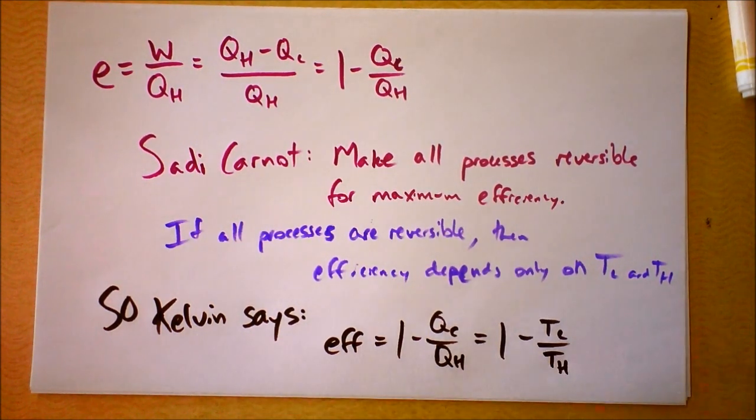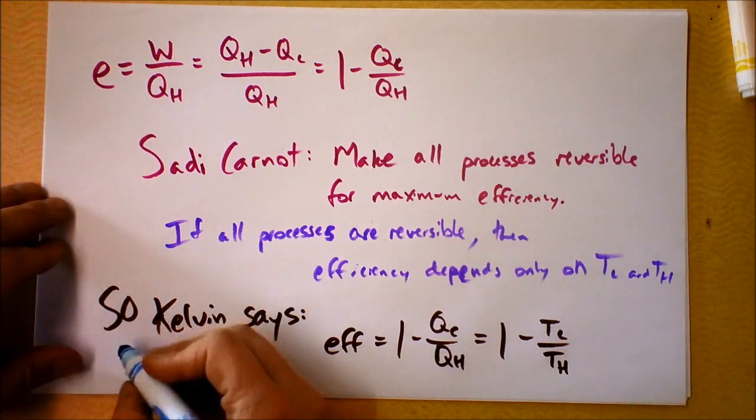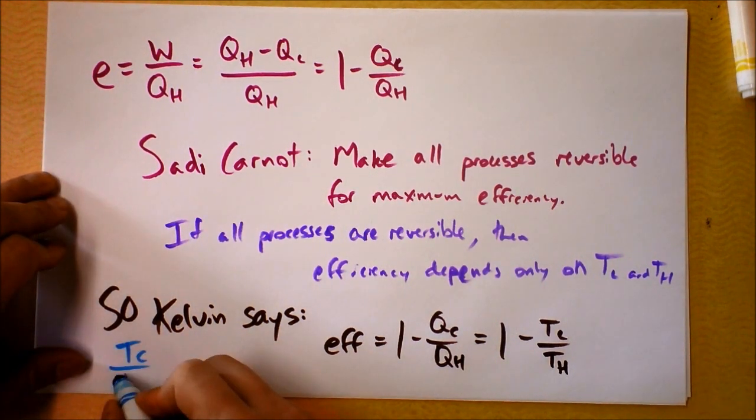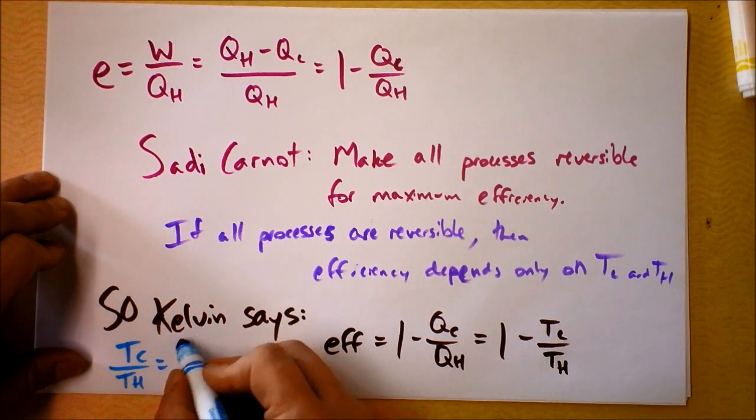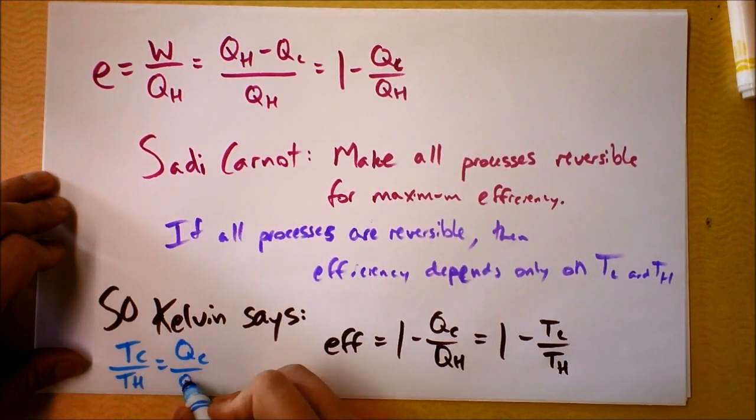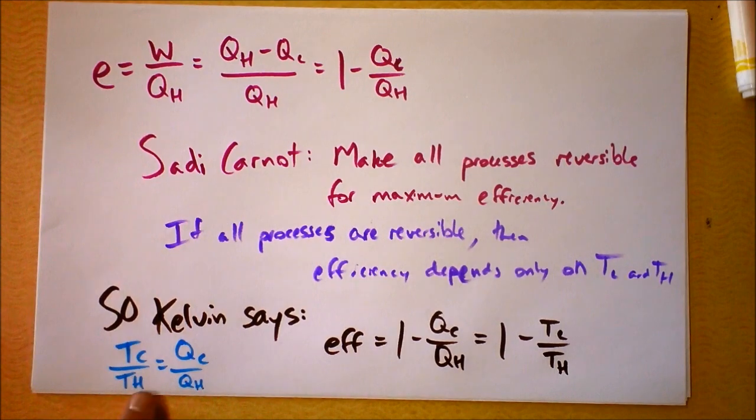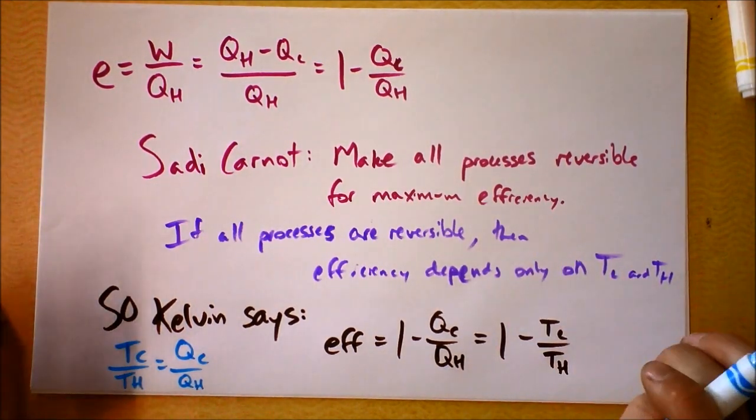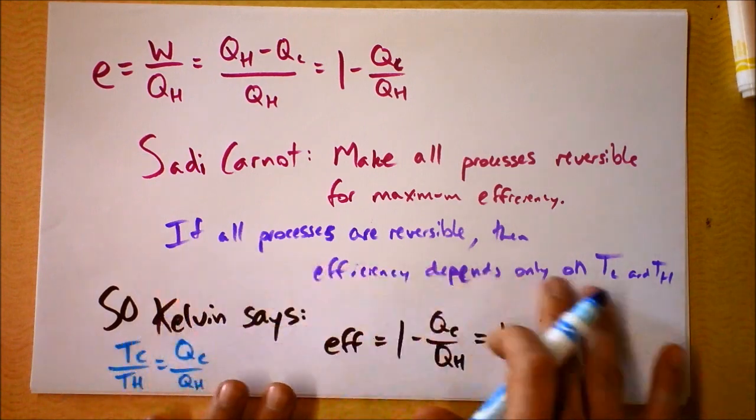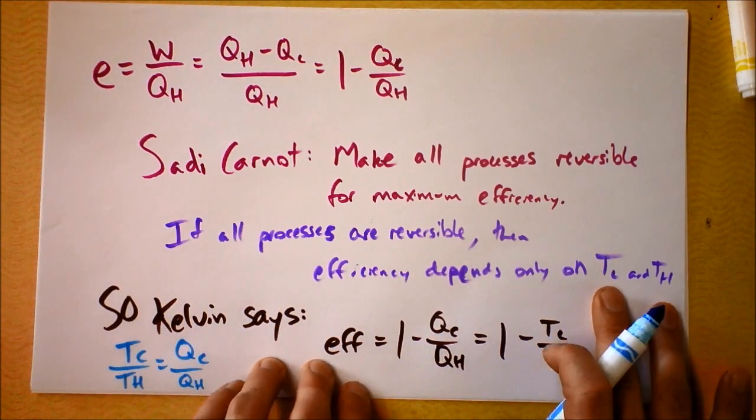And so Lord Kelvin developed a new equation, in fact a new definition of temperature. And that is TC over TH equals QC over QH. And you can define temperature based on the heat that's flowing in an engine. And this statement that all processes being reversible and efficiency depends only on the temperature, this is actually a restatement of the second law of thermodynamics.